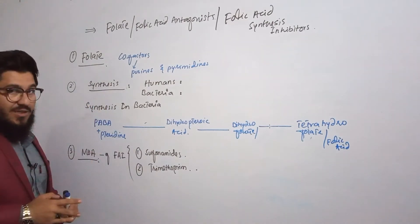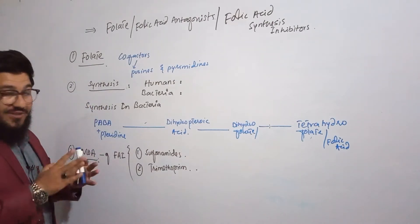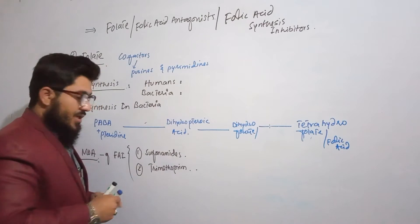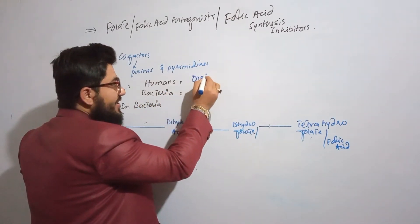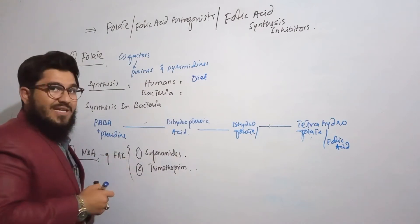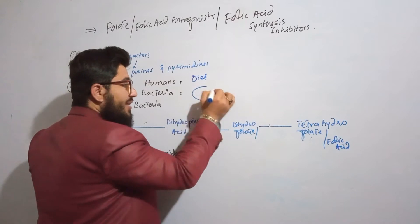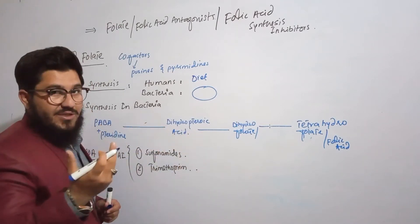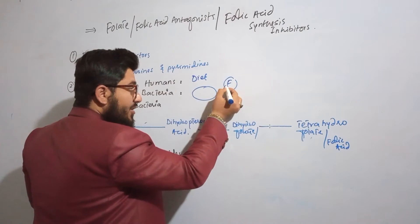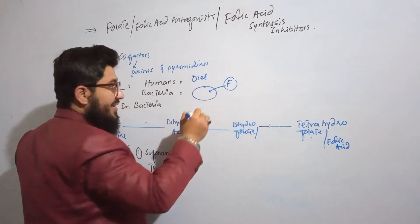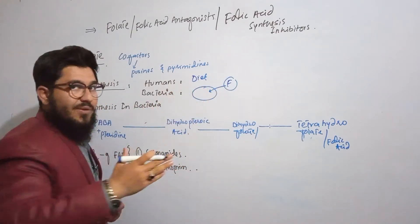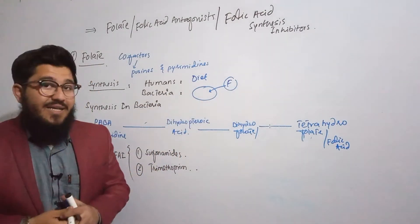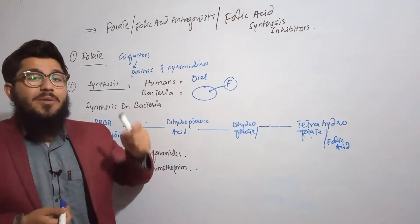Now let's come towards the synthesis. We must know this very important point: humans cannot synthesize folic acid, but bacteria can synthesize it. So humans are responsible to take folic acid in their diet, whereas bacteria synthesize it internally. Importantly, if folic acid is already available in the environment, it cannot cross the membrane of the bacteria — the bacterial membrane is impermeable to folic acid.